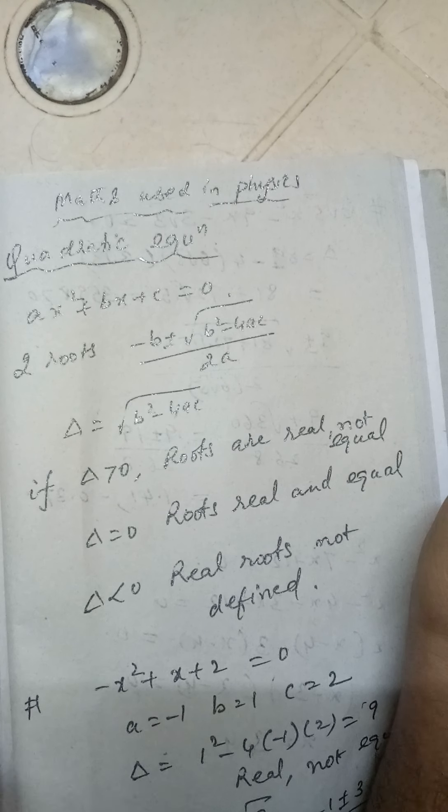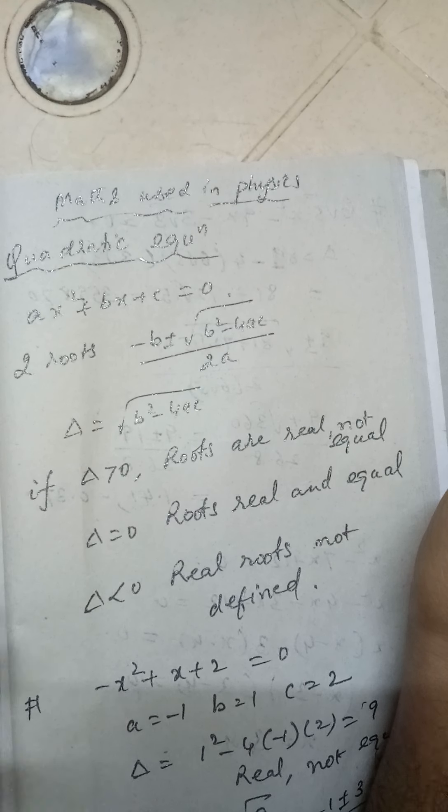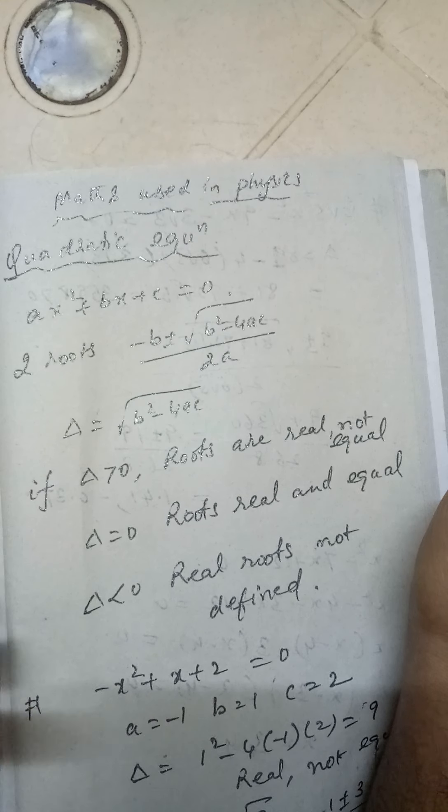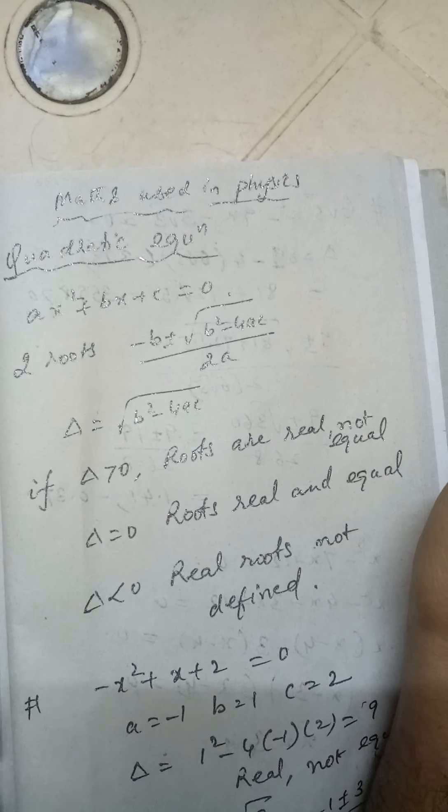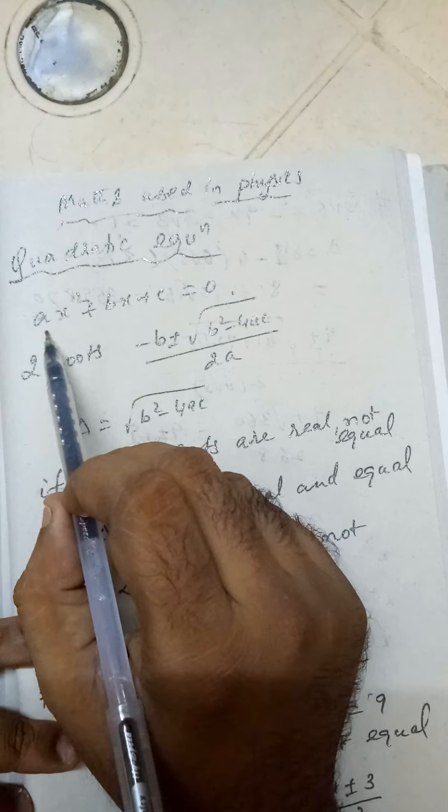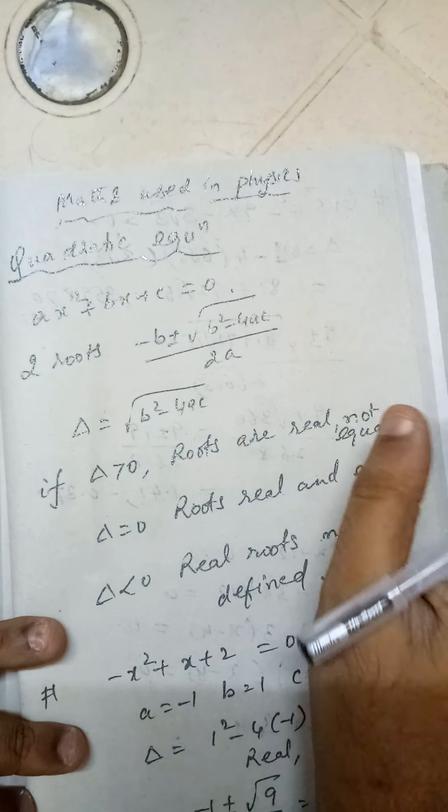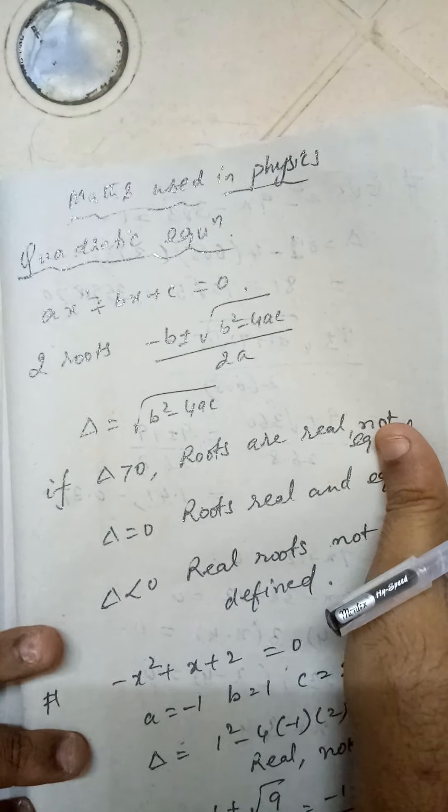So you should know how to calculate the roots and take the appropriate roots as a solution. Any equation of the form ax² + bx + c = 0 is called a quadratic equation. It has got two roots.